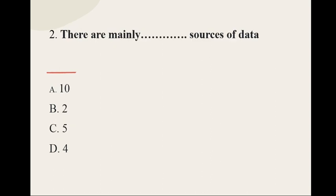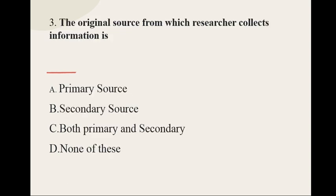Question number two: There are mainly dash sources of data — the options are 10, 2, 5, and 4 — and the correct option is two. There are two types of data.